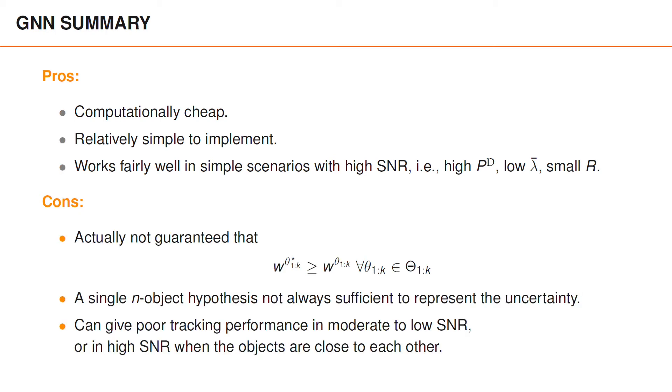When it comes to the disadvantages of GNN filters, it is actually not guaranteed that by greedily taking the optimal assignment in each time step, we will get the data association sequence that is most probable. It can be that, at time k, another sequence of data associations is actually more probable than the greedy sequence. This is related to the fact that a single n-object hypothesis is not always sufficient to represent the uncertainty of the tracking scenario. The GNN filter can give poor tracking performance when the SNR is moderate to low, or when the SNR is high but the objects are close together. In such cases, multiple data association hypotheses will have high probability, and by pruning all of them except for a single one, we get a poor approximation of the posterior density.